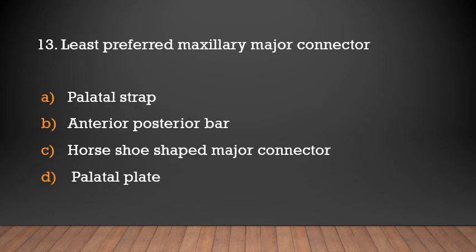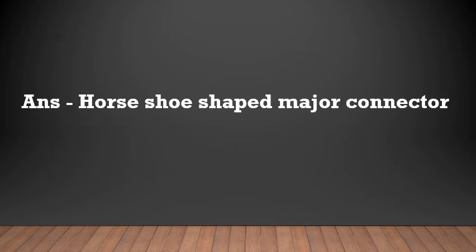Which is the least preferred maxillary major connector? Options: palatal strap, undetained palatal bar, horseshoe shaped major connector, palatal plate. The answer is the horseshoe shaped major connector — it is the least preferred maxillary major connector.